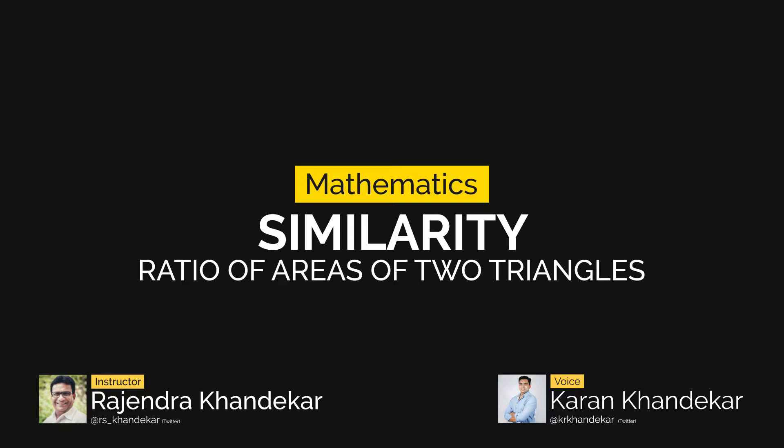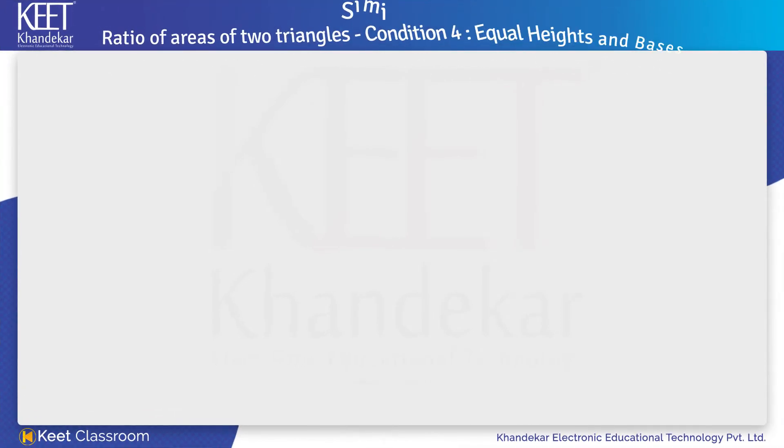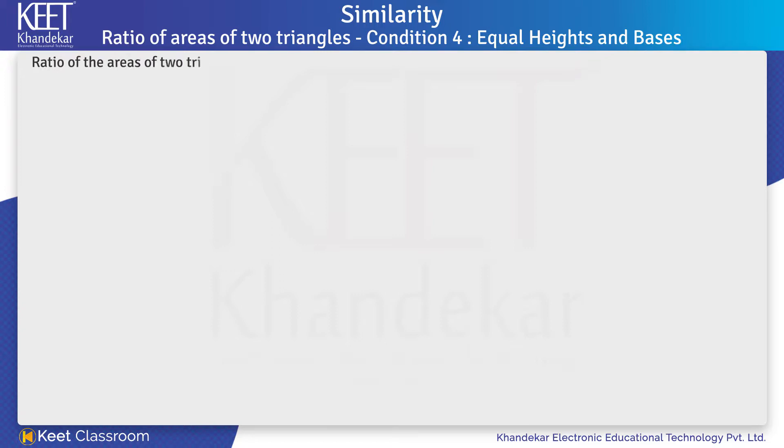In this amazing video, we will learn regarding the 4th condition, i.e., bases and heights are equal. The statement for it is: The ratio of areas of two triangles with equal bases and heights is equal to 1 as to 1, or their areas are equal.